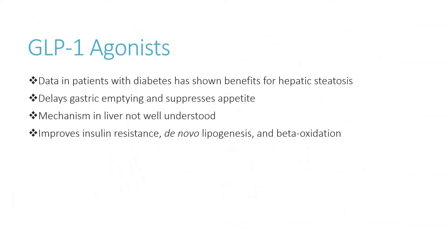GLP-1 agonists have tons of data in patients with diabetes showing benefits for hepatic steatosis. The mechanism of action includes delaying gastric emptying and suppressing appetite, helping with weight loss and insulin resistance. The mechanism in the liver is not super well understood, but they do improve insulin resistance, decrease de novo lipogenesis, and increase beta oxidation, which utilizes free fatty acids built up in the liver. Overall, it appears that insulin resistance is the most important piece in terms of NAFLD.